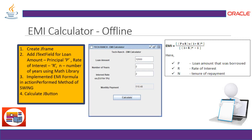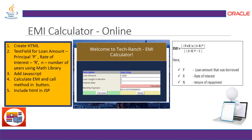The Calculate button is a JButton — once you click on it, it will give you the result. This is the simple offline EMI calculator implemented in the Java Swing API.